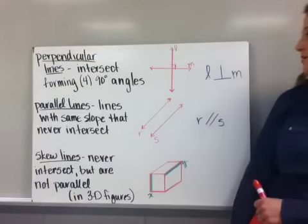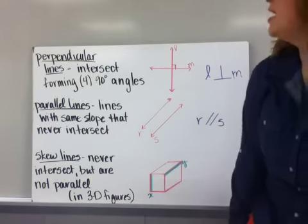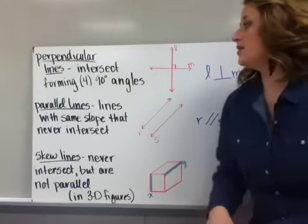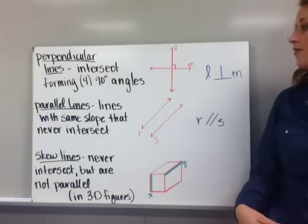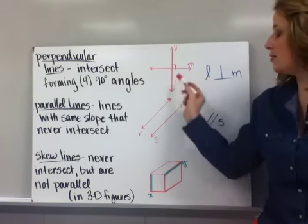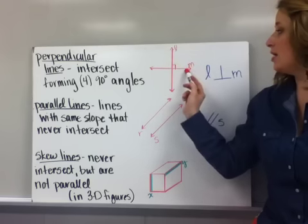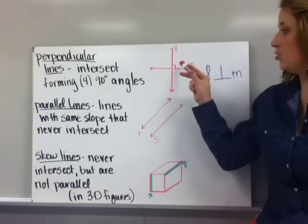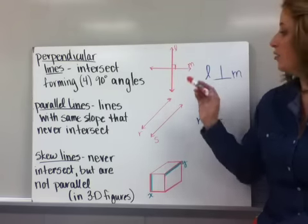Here are three relationships that you will find between lines. First, perpendicular lines. These are lines that intersect forming four 90 degree angles. You can see in this figure that line L and line M are perpendicular because this corner here is a right angle.